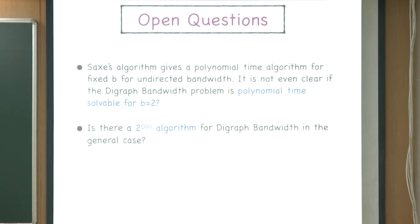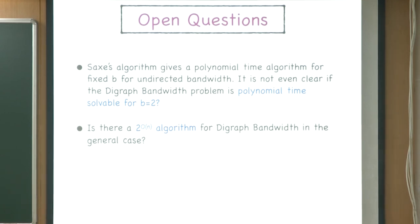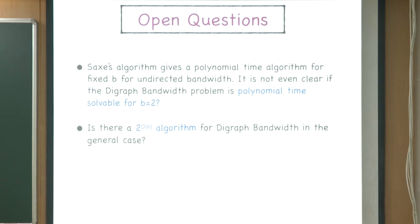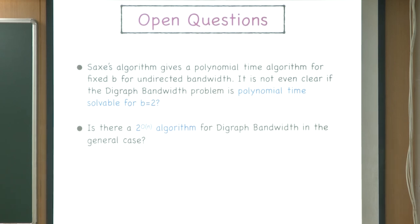For open problems: for undirected bandwidth there is a polynomial time algorithm for any fixed B. For digraph bandwidth, a polynomial time algorithm exists for B=1, but even for B=2 it is open whether it's polynomial or NP-hard. The main open question is: can we design a 2^O(n) algorithm for digraph bandwidth on general graphs without approximation?